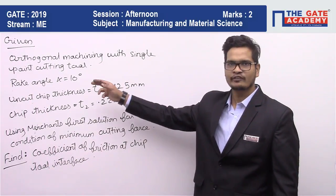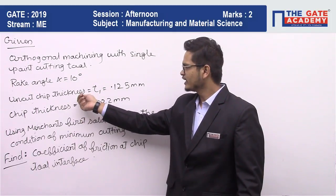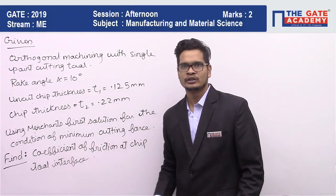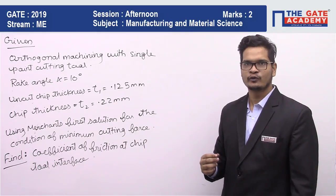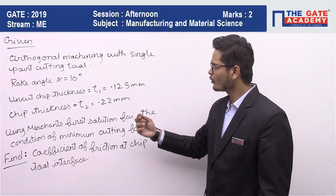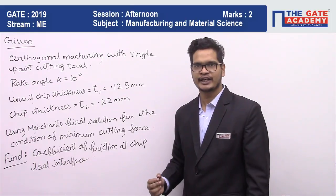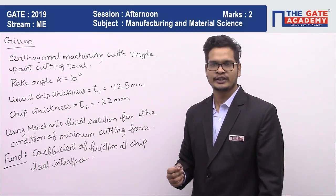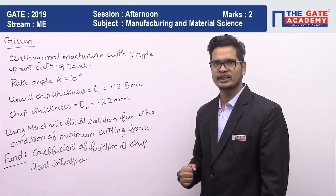So in the question they have given us the rake angle, they have given us T₁ and T₂. So from the ratio of T₁ and T₂, we get the chip coefficient. From chip coefficient, we can find the value of shear angle. Phi is equal to tan inverse of r cos α upon 1 minus r sin α.